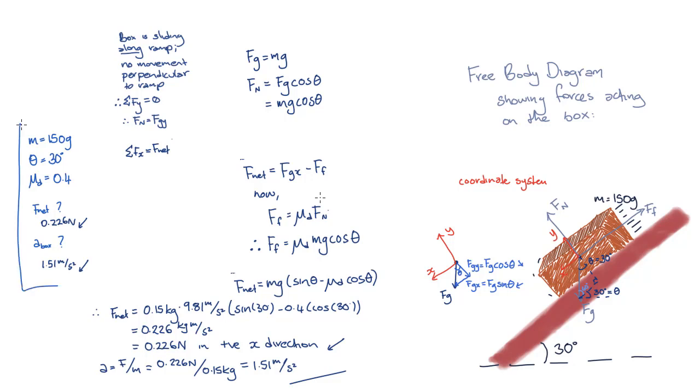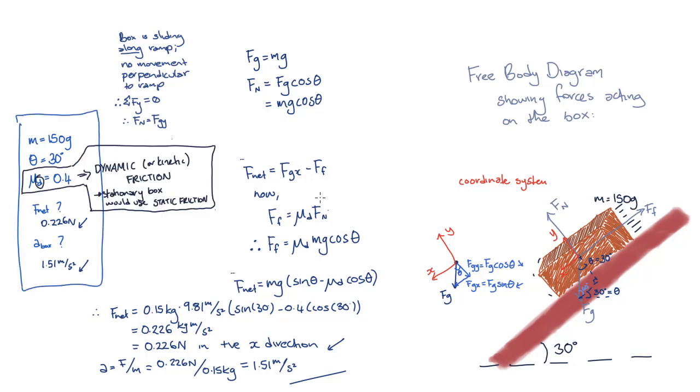The friction that we looked at in this video was dynamic friction, which is also known as kinetic or sliding friction. This friction opposes the direction of motion with a force determined by the coefficient of friction and the normal force.